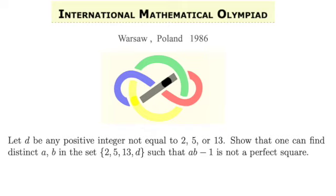This question looks simple. d is a positive integer not equal to 2, 5, or 13. And all that we need to do is show that we can find two distinct integers a and b in the set {2, 5, 13, d} such that ab-1 is not a perfect square.